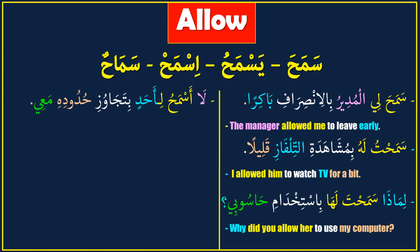Next sentence: 'La asmahu li ahadin bitajawuzi hududihi ma'i' — it means 'I don't allow anyone to cross his boundaries with me.' La asmahu: I don't allow. Li ahadin: to anyone. Bitajawuzi hududihi: to cross his boundaries. Ma'i: with me.